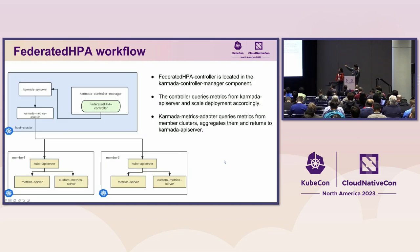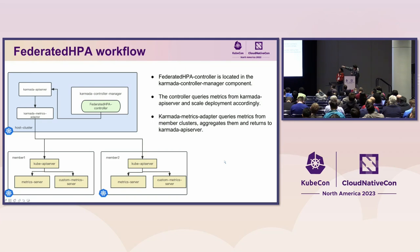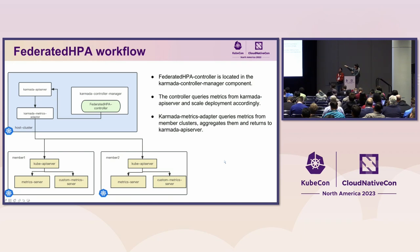The Federated HPA controller is located in the Karmada controller manager component. It queries metrics from the Karmada API server and scales replicas of deployments accordingly. The Karmada API server queries the Karmada metrics adapter, which in turn queries the metrics servers of member clusters to obtain metrics or custom metrics, aggregates them, and finally returns them to the Karmada API server. The Federated HPA essentially mimics the mechanism of native HPA.